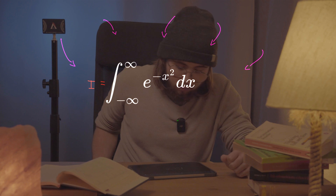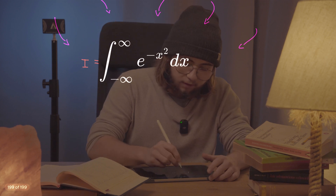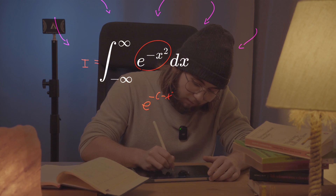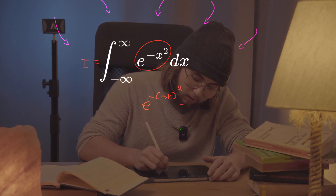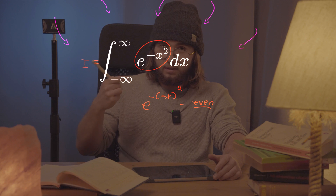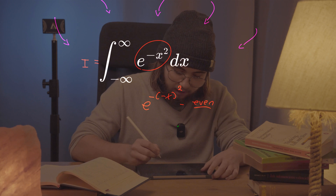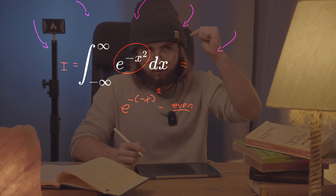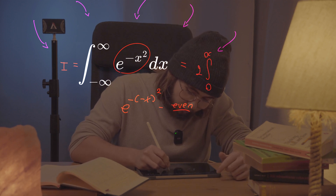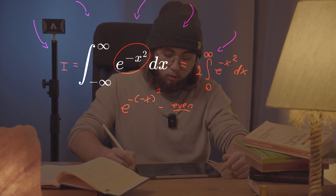I'll call this integral I to keep track of it. One thing to note: e to the negative x squared equals e to the negative (negative x) squared, so the function is even. Because we have symmetric bounds of integration, I can write the integral from negative infinity to infinity of e to the negative x squared as double the integral from zero to infinity of e to the negative x squared dx.